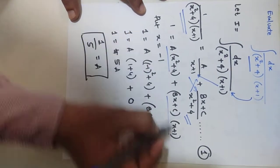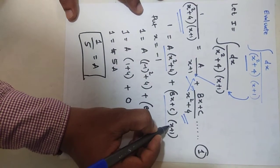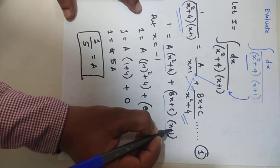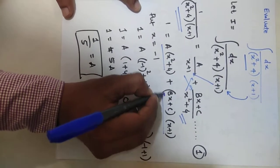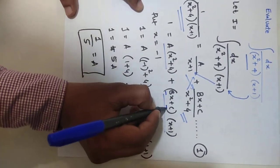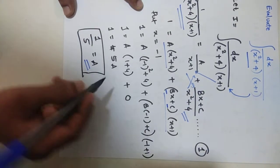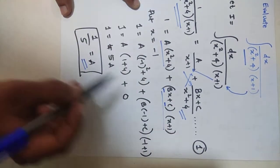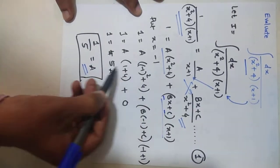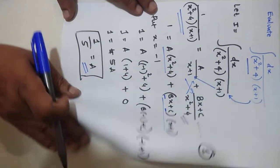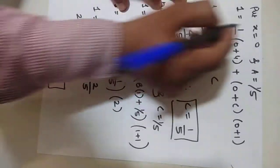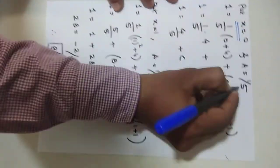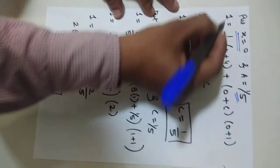Now put x = -1. If you put x = -1, the (x + 1) bracket becomes 0, and the Bx + C terms also vanish, leaving us only with A. Substituting x = -1 into the equation gives us the value of A = 1/5.